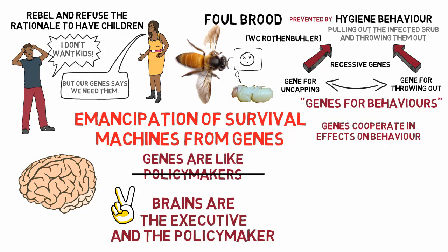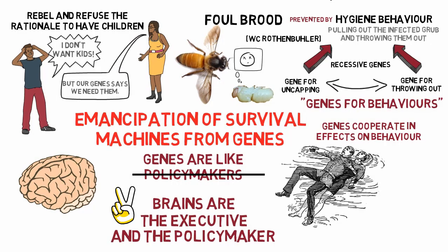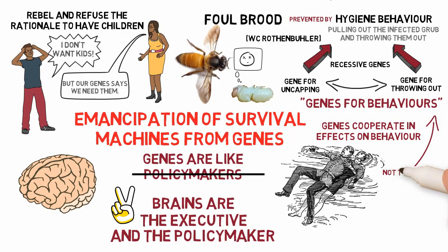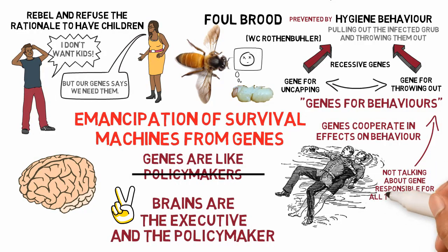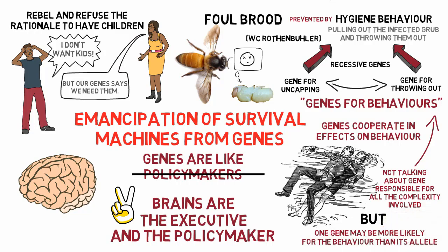We should remember these points when talking about genes for saving companions from drowning — we are not talking about the gene as the cause of all the complexity involved. It is possible that a gene makes a body more likely to save someone than its allele.